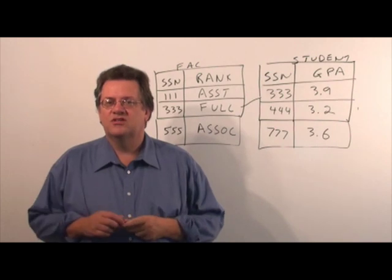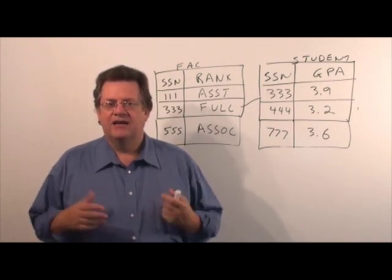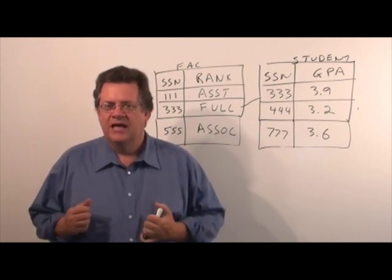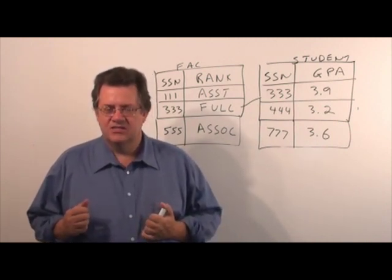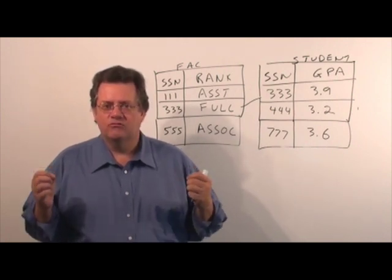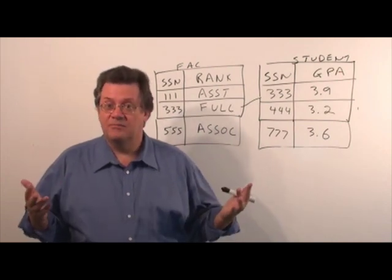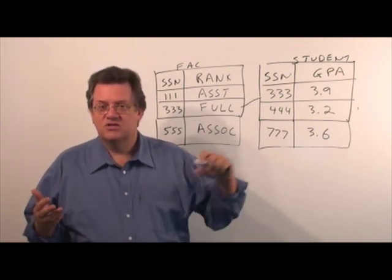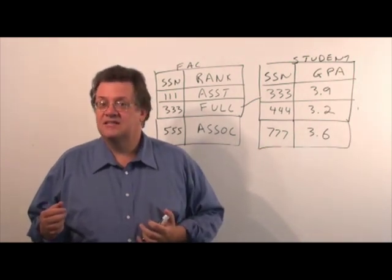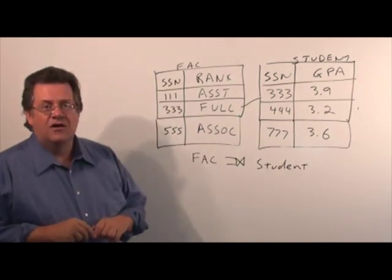Now in our next example we're going to be looking at the outer join. I find a lot of students confuse the semi join with the outer join. The difference is with the outer join we retain all the rows from a particular table, maybe even both tables. If it matches we show the corresponding attributes that it would join with, and if it doesn't match we would fill it in with null values.